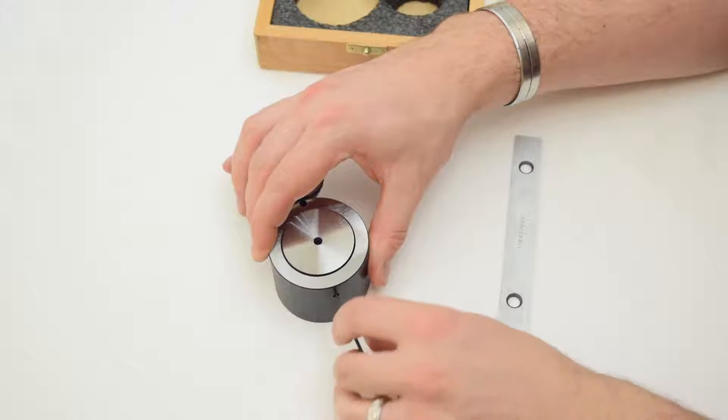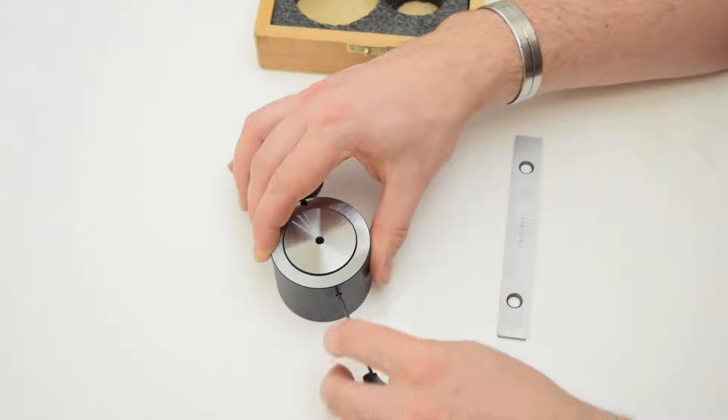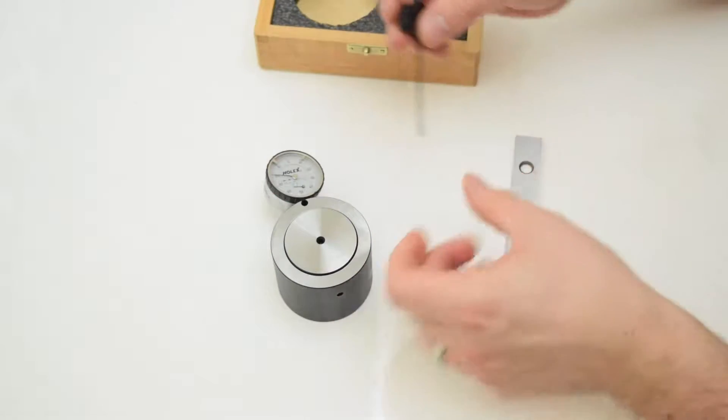So to set the tool we unlock the grub screw and we also unlock the grub screw that's holding the dial indicator down as well.